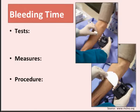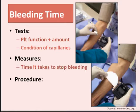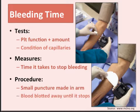The bleeding time test is pretty much just like it sounds. What we're measuring are platelet functions and amounts, and the condition of our capillaries. Physically, we are measuring how long it takes someone to stop bleeding. How this is performed — and it's not often done anymore, but it can be — is a small puncture is made in the arm with something that looks kind of like the lancets used for a finger poke.